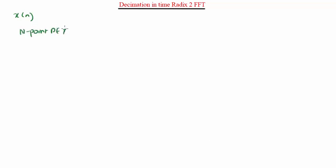In general, we can say that an N-point DFT can be realized from 2 numbers of N/2-point DFTs. The N/2-point DFT can be realized from 2 numbers of N/4-point DFTs, and so on.